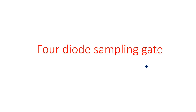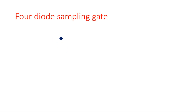In this video I am going to explain about the four diode sampling gate. Here we are using four diodes for transmitting the input part of the signal to the output. Before going into the four diode sampling gate, we have previously seen the two diode sampling gate and its drawbacks, which we can rectify using the four diode sampling gate.